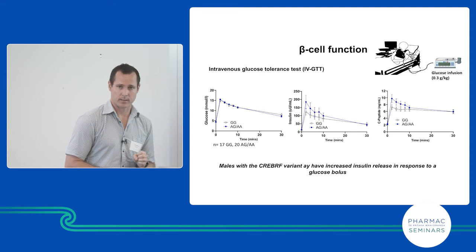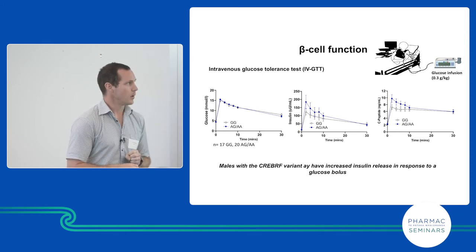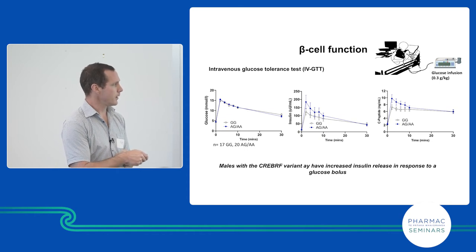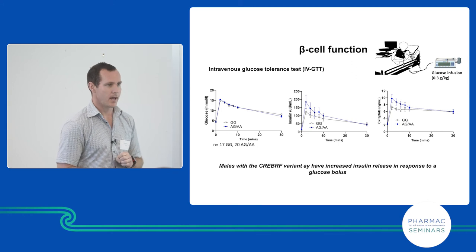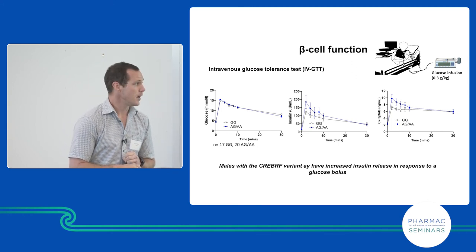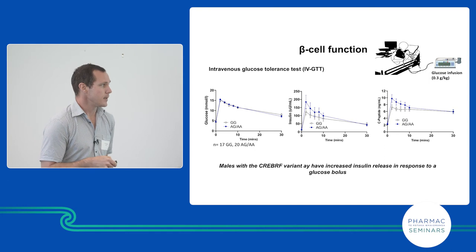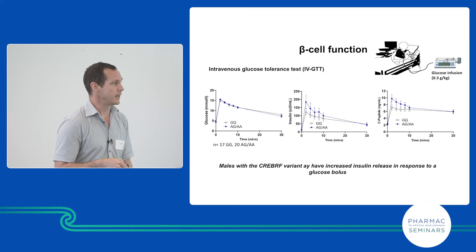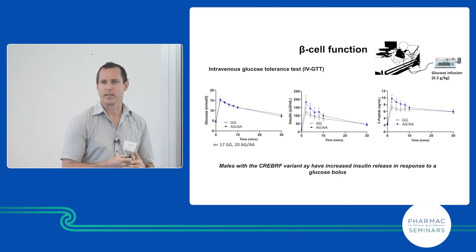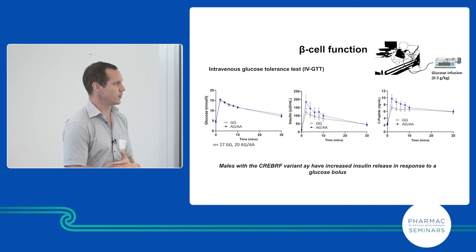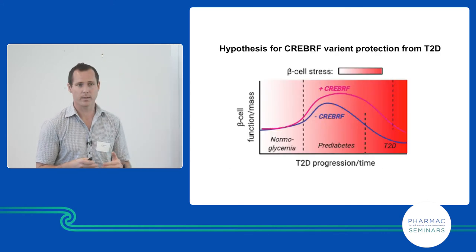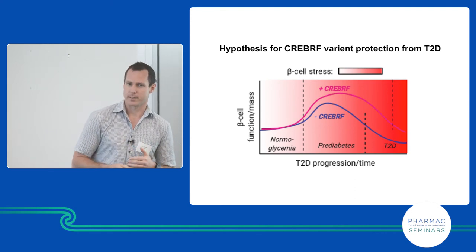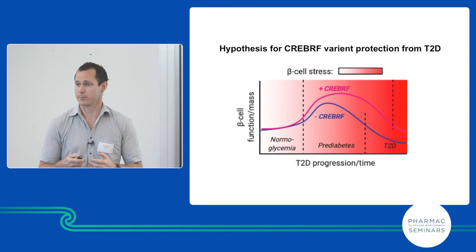We also did an intravenous glucose tolerance test — infusing a large bolus of glucose and following the change in blood glucose, which goes up to around 15 millimolar and then comes back down very similarly in both groups. But what we're starting to see is that there tends to be an increase in insulin being released in response to glucose and an increase in C-peptide, which is a precursor for insulin and a better measure of overall insulin release. So we think the CREB3RF variant is protecting from type 2 diabetes by improving beta cell function — the ability of the pancreas to release insulin.